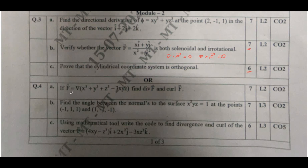Moving to question number 4a: find the divergence and curl of the given vector f. The divergence of f is 6(x + y + z), and the curl of f is 0. Next, find the angle between the normals of the surface x²yz = 1 at points (−1, 1, 1) and (1, −1, −1). I have solved this type of problem in previous model question paper videos — use the formula for the angle between two normals. That carries 7 marks.